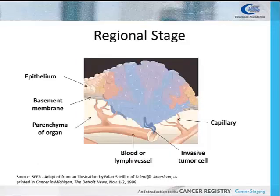Regional stage is tumor extension beyond the limits of the organ of origin. Regional stage has several subcategories which describe the different methods of regional spread of tumor. These methods of spread are: regional by direct extension only, when there is invasion through the entire wall of the organ into surrounding organs and/or adjacent tissues; regional lymph node only, when there is tumor invasion of the lymphatic walls where tumor cells have traveled through lymphatic vessels to nearby lymph nodes, where they are filtered out and begin to grow in the nodes; or regional by both direct extension and lymph node involvement, where there is both invasion beyond the organ of origin and regional lymph nodes positive for cancer.